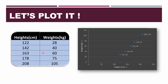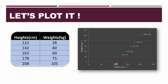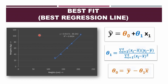So let's plot it. My data has been plotted here — 122, 128. I have taken the independent variable, height in centimeters, on the x-axis, and my dependent variable, the response variable, weight, on the y-axis. I have plotted the points: this point is 122 from the x-axis and 28 on y, and similarly 142, 40, and so on till 208, 105. The goal of regression is to plot a line to predict these data points — regression means finding the best fit, the best relationship between my data points on the x-axis and y-axis.